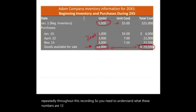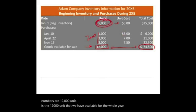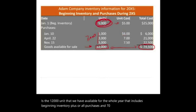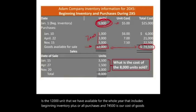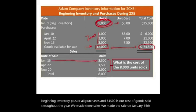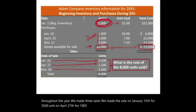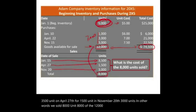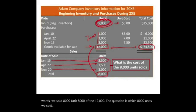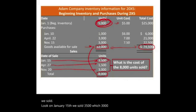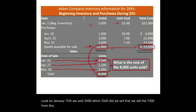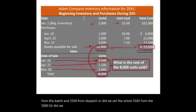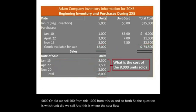The 12,000 units available includes beginning inventory plus all purchases. The $74,500 is our goods available for sale. Throughout the year, three sales were made: January 15th, 3,500 units; April 27th, 1,500 units; November 20th, 3,000 units — totaling 8,000 units sold out of 12,000. The question is: which 8,000 units were sold? On January 15th we sold 3,500 — but which 3,500? Did we sell from this batch or that batch? This is where the cost flow assumption comes into play.